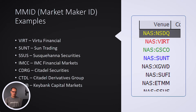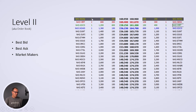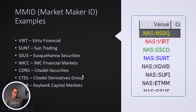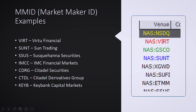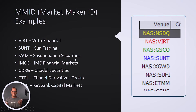When we're looking at that level 2 screen, on the side here you have these four-digit codes. You'll see NAS and then a code — that means NASDAQ. We're looking at a level 2 NASDAQ screen here, and these are a list of different market makers. So you'll see NSDQ, VIRT, GSCO. VIRT is Virtue Financial, SUNT is Sun Trading, SSUS is Susquehanna Securities. These are what we call market makers. Market makers can either be retail, smaller firms, or large institutional firms like JP Morgan or UBS. As you look through that list, you can see what each of these market makers is bidding and asking for a specific security.